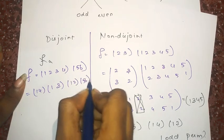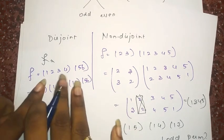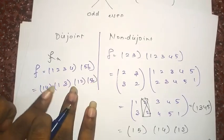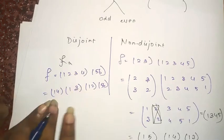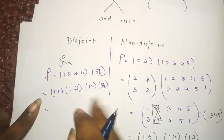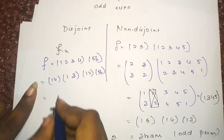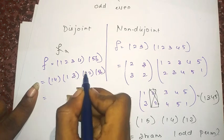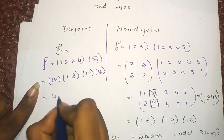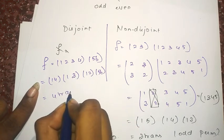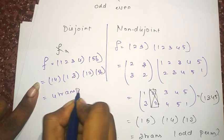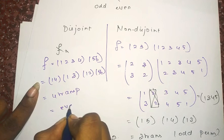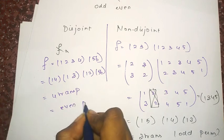You can also do the composition and check it — you will get the same answer: (1 2 3). That gives four transpositions, so it is an even permutation.